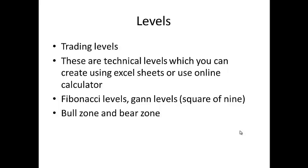In a bull zone, even when news suggests the market will go down, the market reacts in the opposite direction. These are called psychological levels — areas where even bad news causes the market to react the other way. Bull zone means the market is trending in the positive direction; bear zone means it is trending lower. Even with a buy signal from Gann levels, we cannot be 100% sure the trade will be profitable.